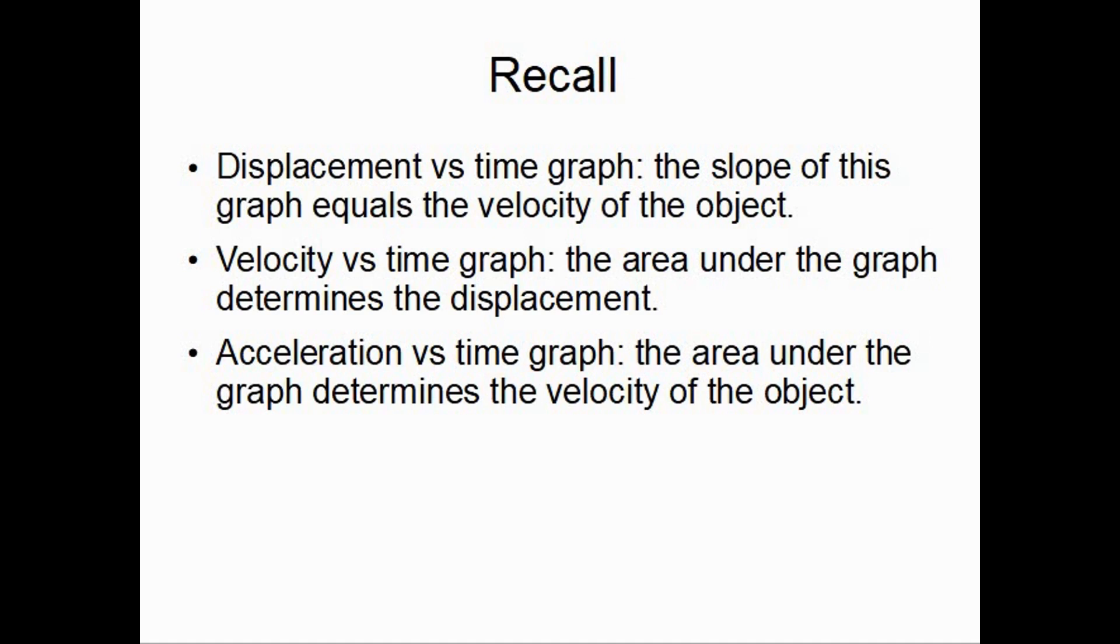So let's just recall for the graphs that for the displacement versus time graph, the slope of the graph equals the velocity of the object. We can calculate the velocity of an object by just calculating the gradient of the displacement time graph curve. For the velocity versus time graph, the area underneath the graph determines the displacement of the object.